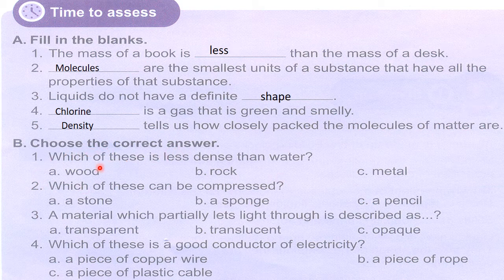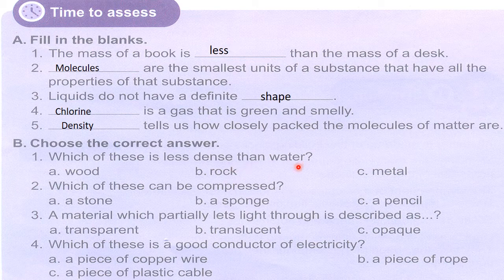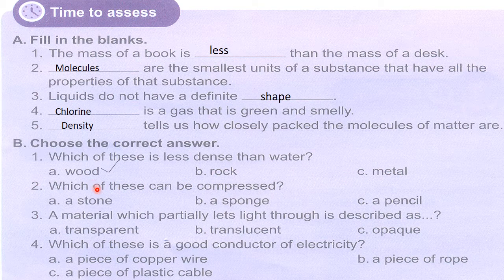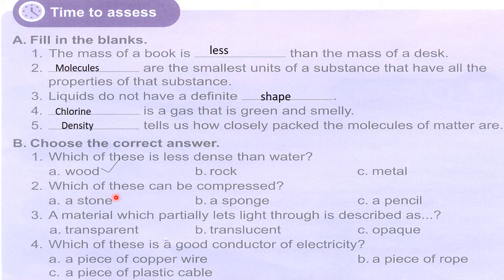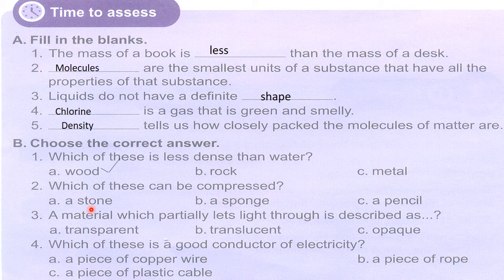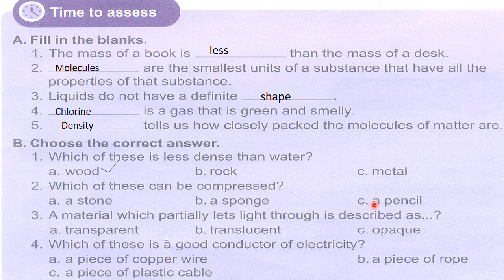Choose the correct answer: which of these is less dense than water - wood, rock, or metal? Definitely wood. Which of these can be compressed: a stone, a sponge, or a pencil?